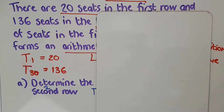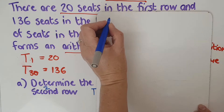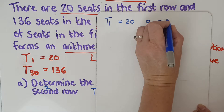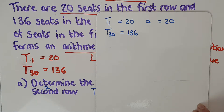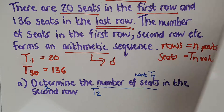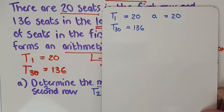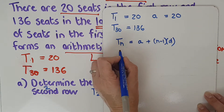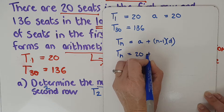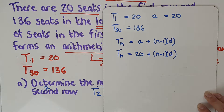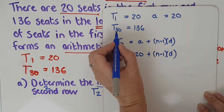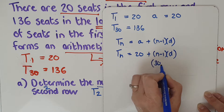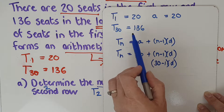I'm going to bring in another whiteboard so I don't have to erase anything. I've got t1 equals 20 — remember that means a equals 20. I've got t30 equals 136, and I know this is arithmetic. I want t2. So tn is 20 plus (n minus 1)d. I don't have d, but I've got t30, so when n is 30, tn is 136.